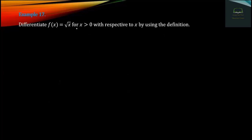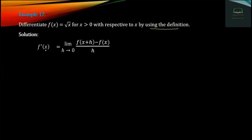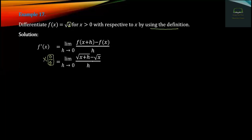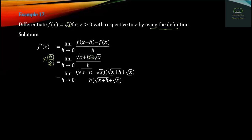Differentiate f of x equals square root of x, for x greater than zero, with respect to x by using the definition. Do not forget to rationalize — you can multiply by the conjugate to make each term simplify, which will give you the formula.